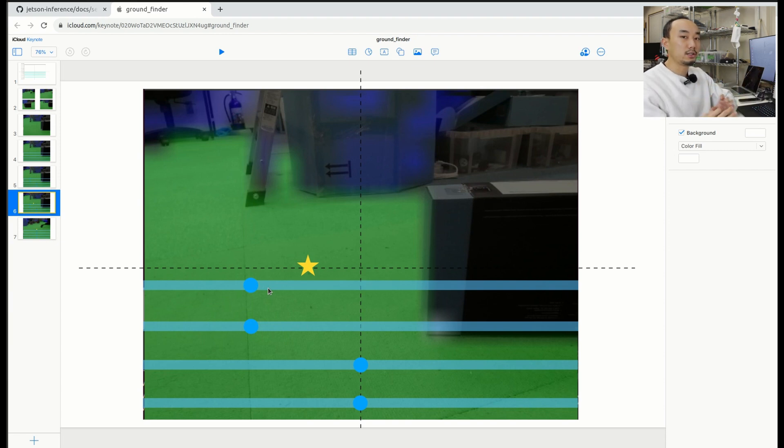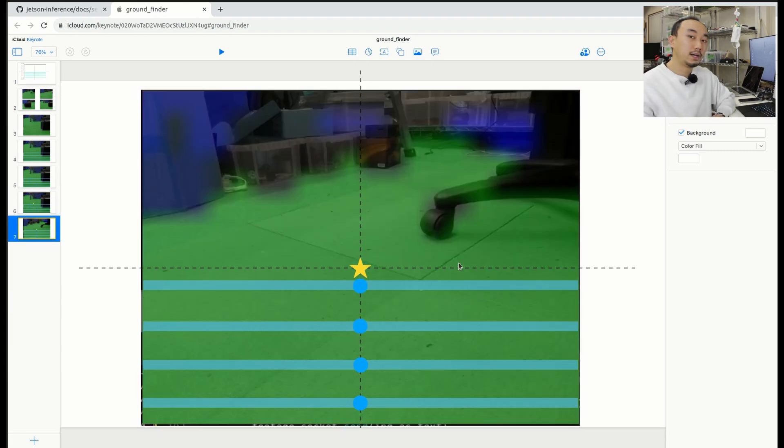Similarly if the star is on the right side, that means the right side has more open space so just steer the robot to the right side. In the ideal case where left and right have the same green colors, the star will be in the middle and that just makes the robot go straight.